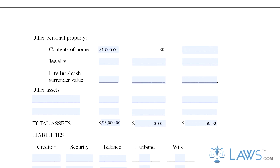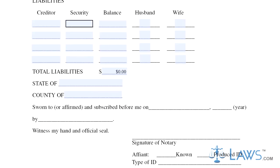Step 6: Total your liabilities on the fourth page. Include the creditor name, security, and balance for each one.